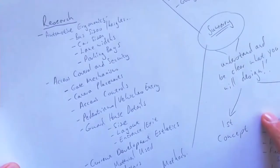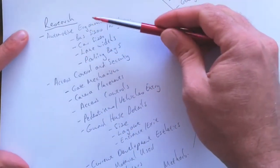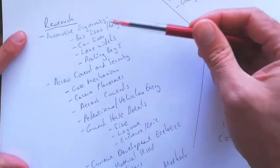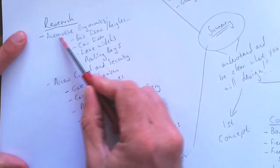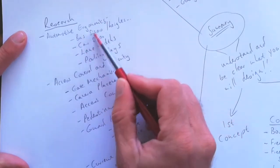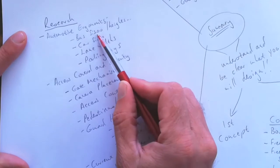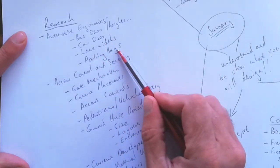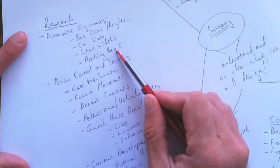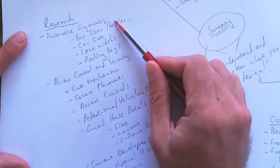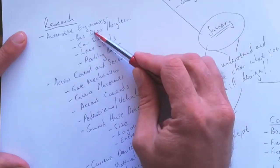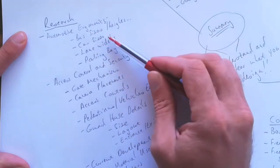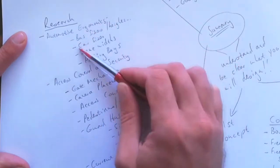We've gone on to research with three specified categories: automotive ergonomics, access control and security, and current development aesthetics. For automotive ergonomics, you have to answer questions like what are the sizes of a bus, the height of cars, the lane widths, the parking bays. You have to consider these elements because they will determine the size of your gates, entrances, exits, whether you'll have two lanes or one, and how high your roof will be.